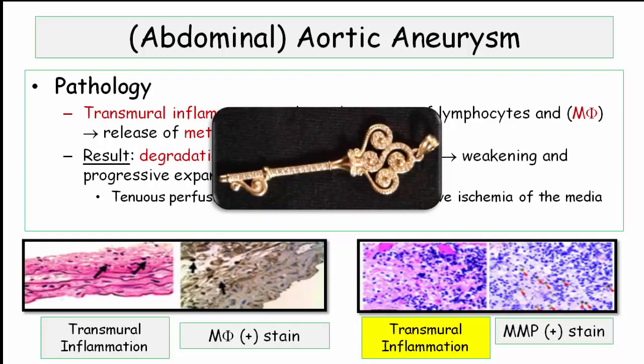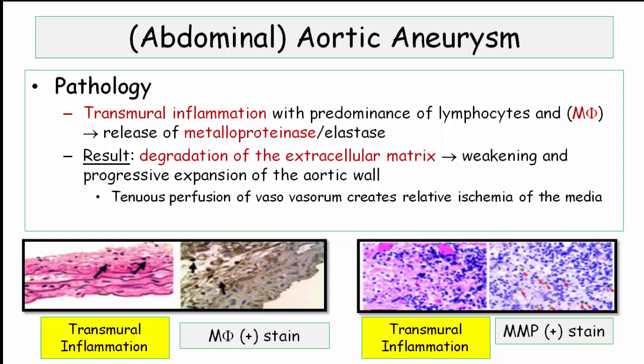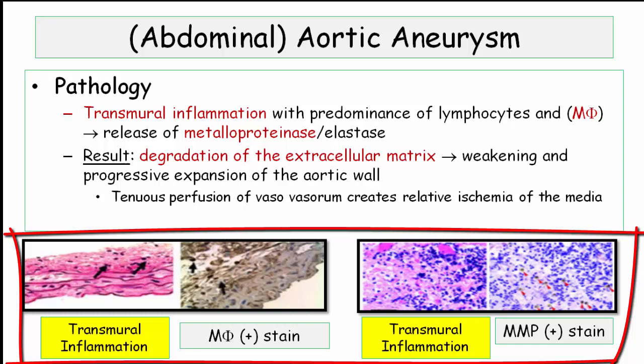Pathology is the key slide for the aneurysm section. The pathologic hallmark includes transmural inflammation of the vessel wall. Lymphocytes and macrophages predominate. As with the vulnerable plaque in the discussion of coronary artery disease, macrophages elaborate matrix metalloproteinases and elastases, both of which lead to degradation of the extracellular matrix. Loss of matrix results in weakening and expansion of the aortic wall. The graphics are included to underscore the key features of vessel wall inflammation and the elaboration of matrix metalloproteinases by the macrophages.